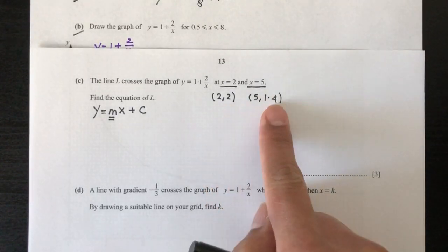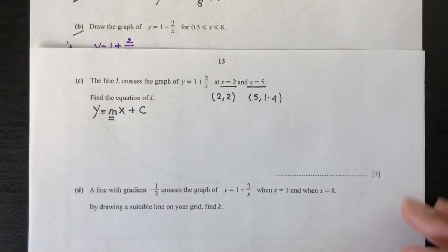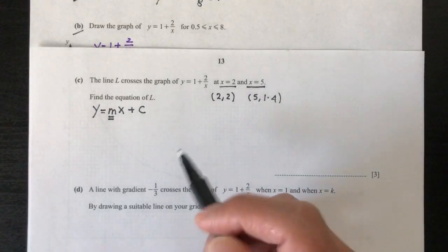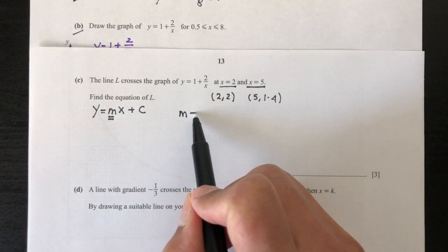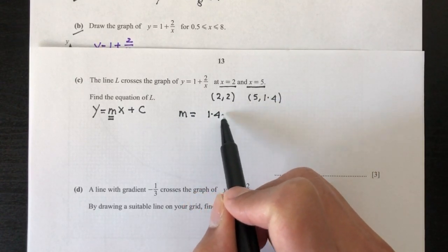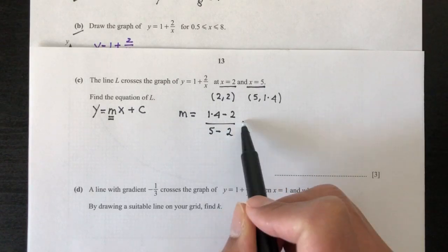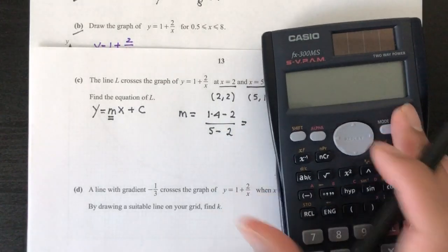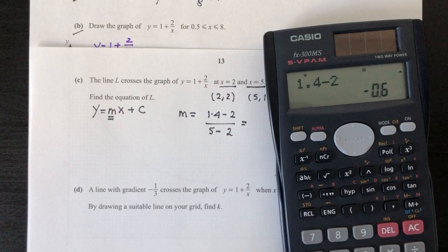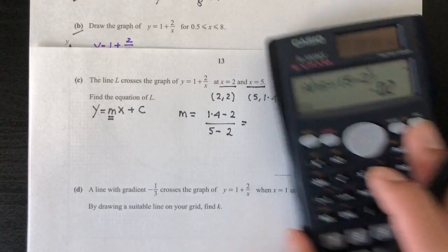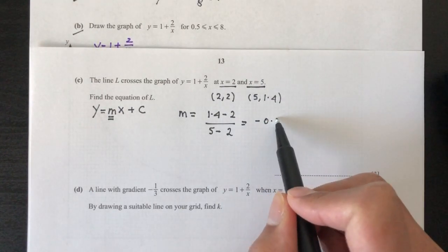So now if you have two points, you can find your gradient by using your formula, which is m = (y2 - y1) / (x2 - x1). So (1.4 - 2) divided by (5 - 2). That will be -0.2.